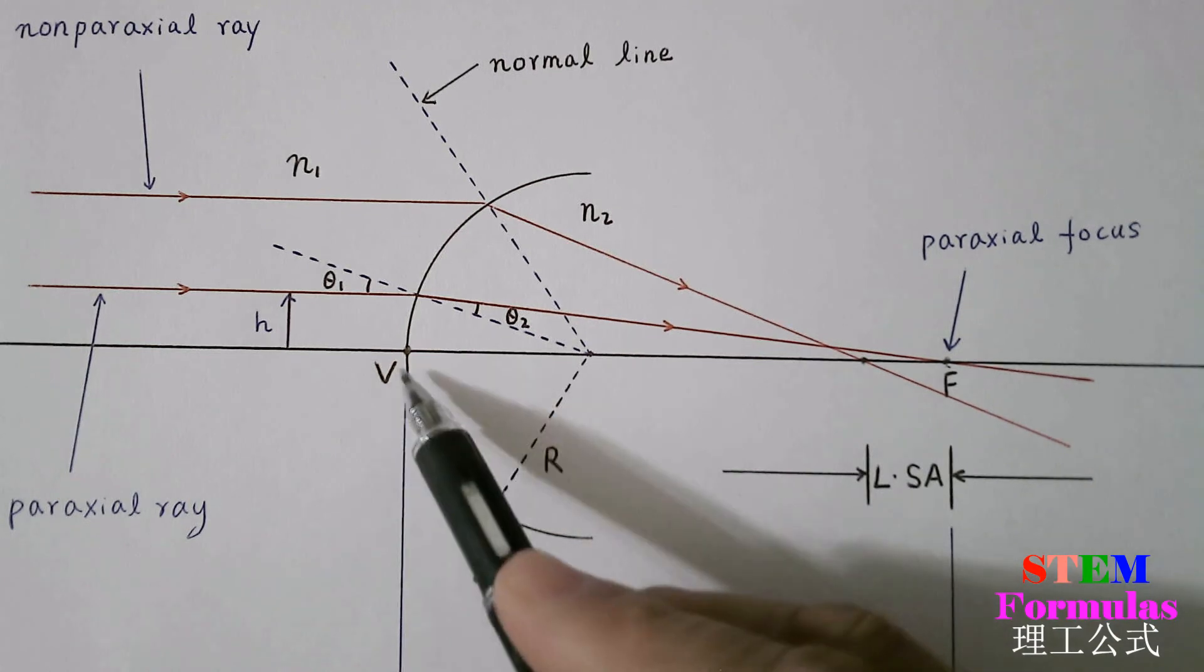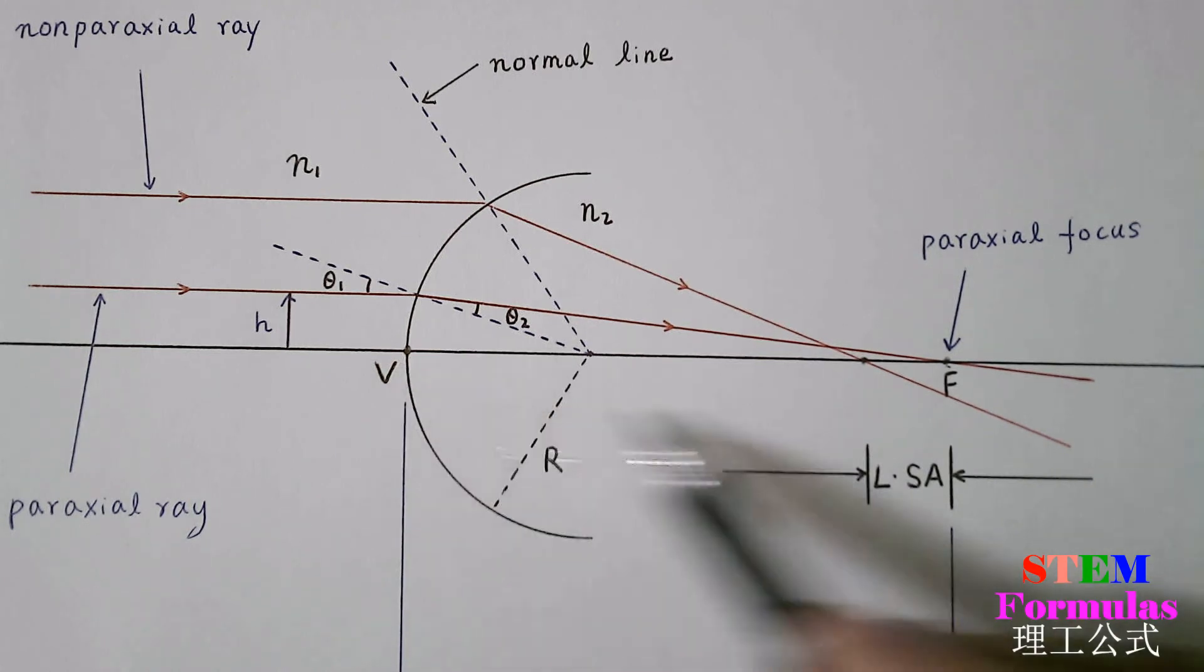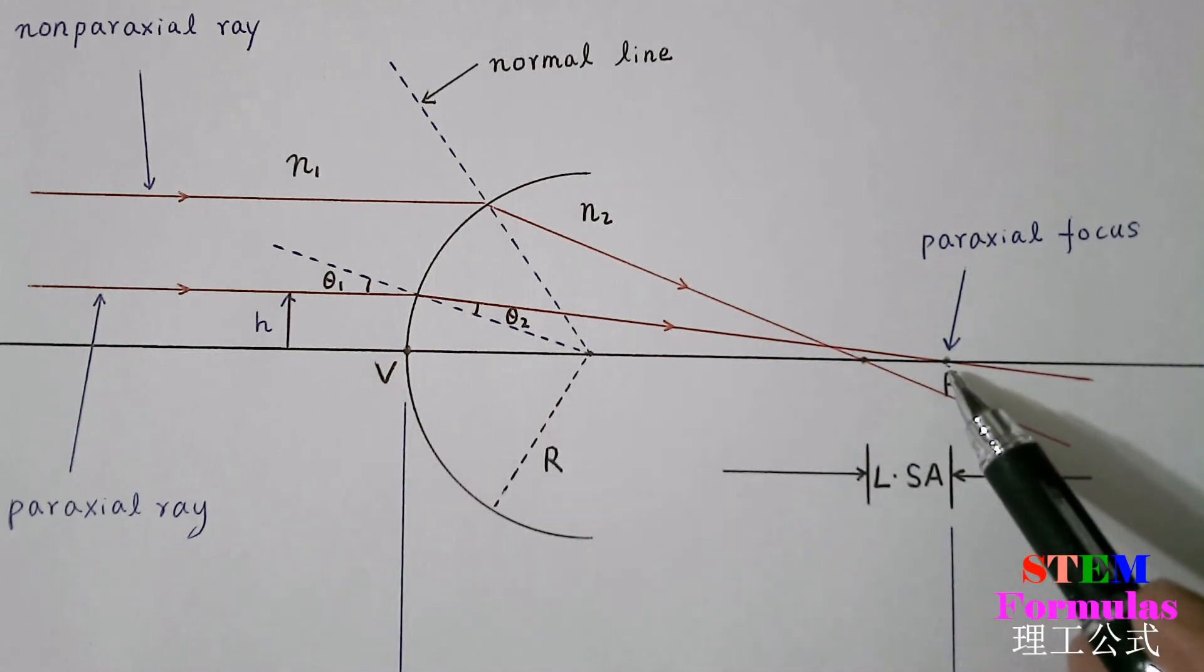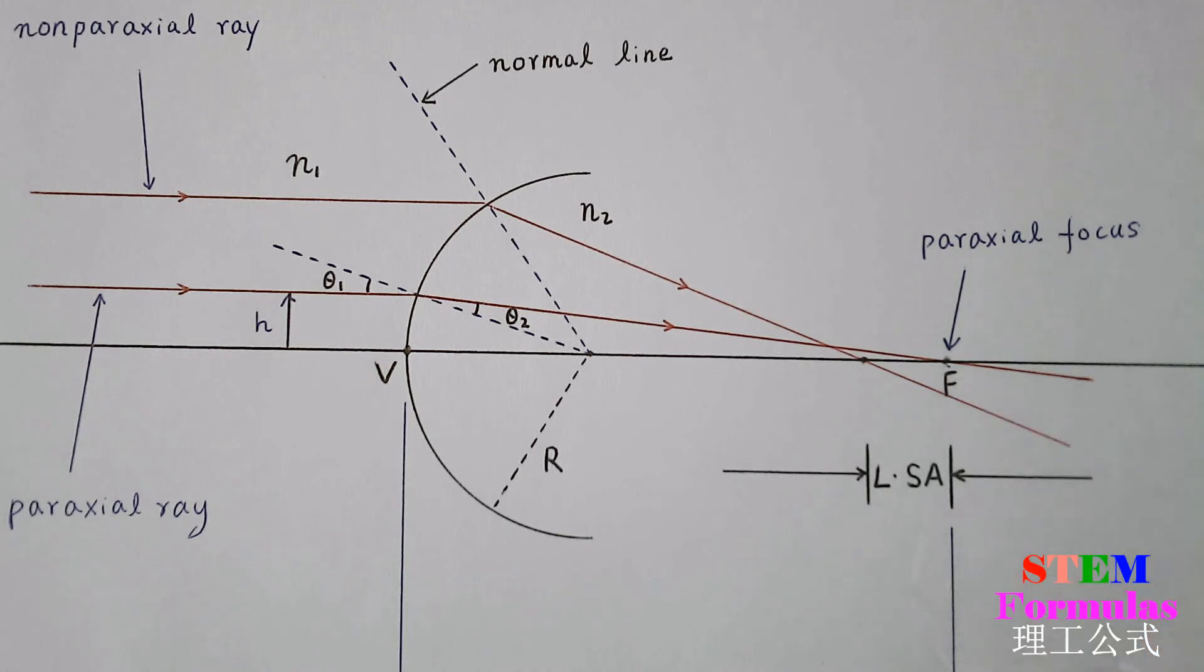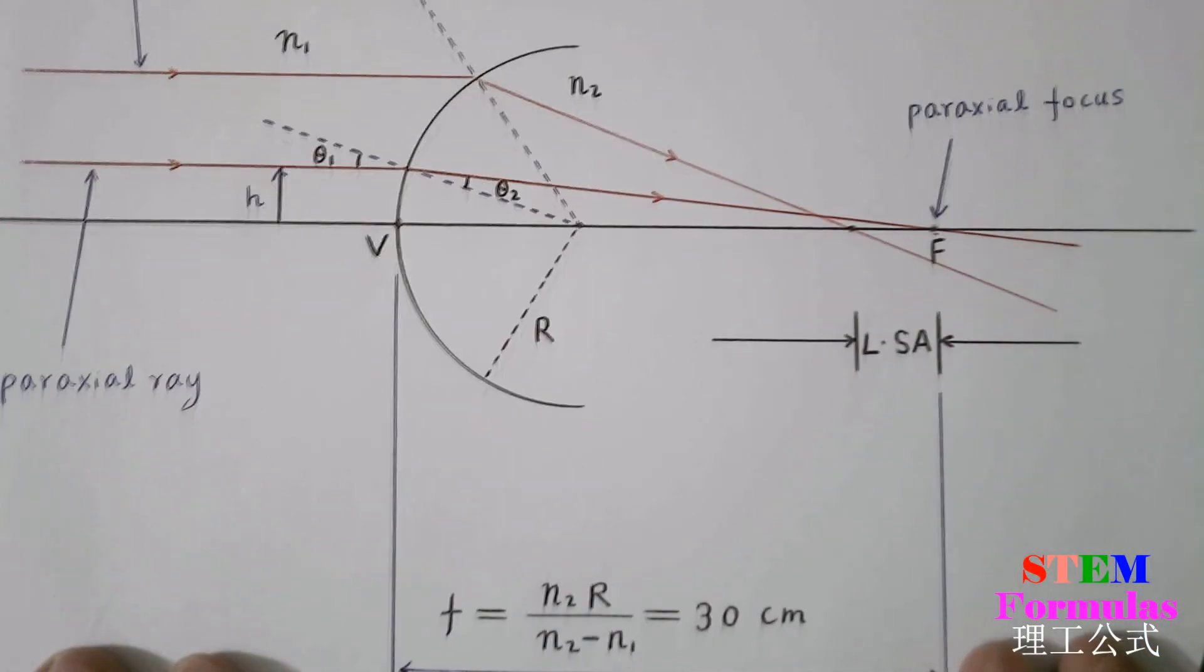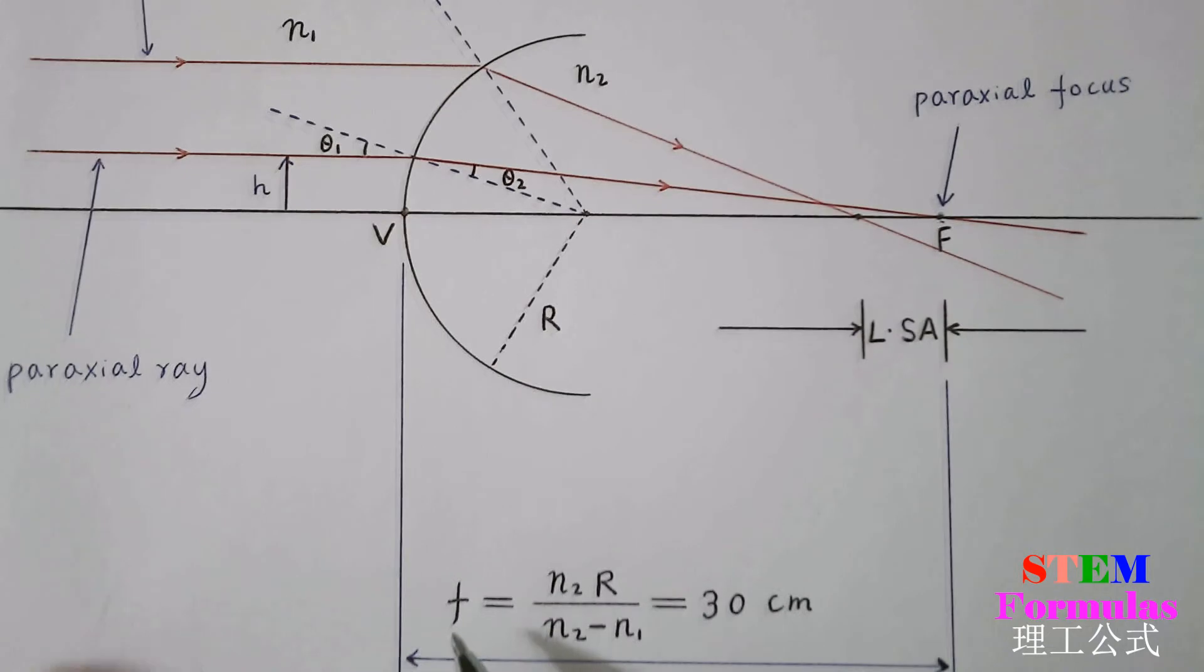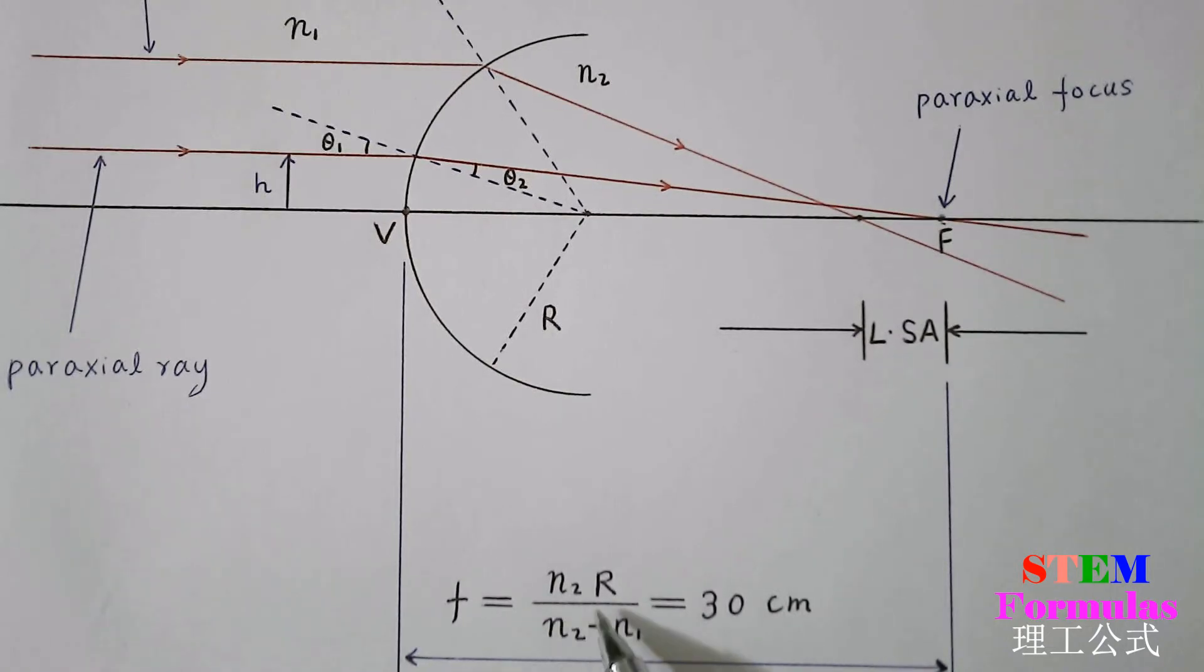The distance between vertex V to focal point is the focal length and can be found as f equals N₂ times R divided by N₂ minus N₁. In our case, it is 30 centimeters.